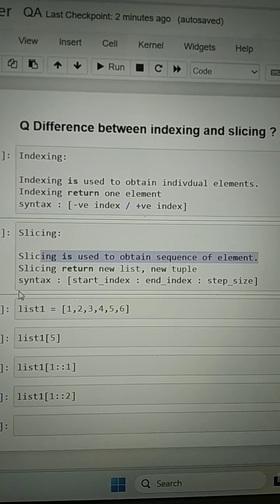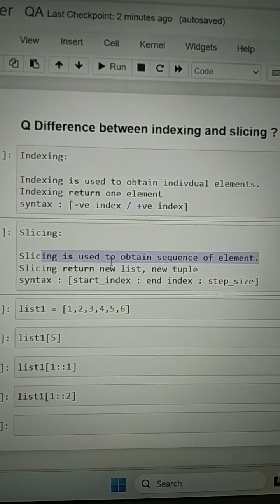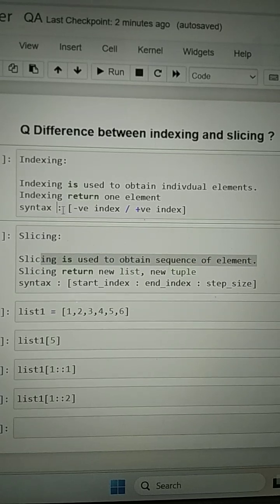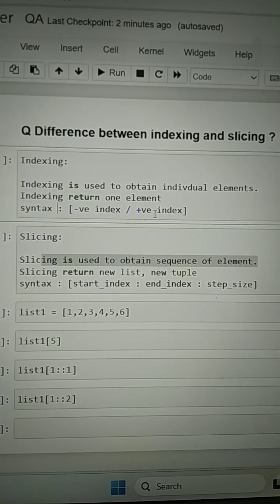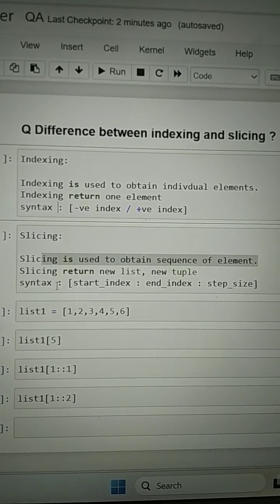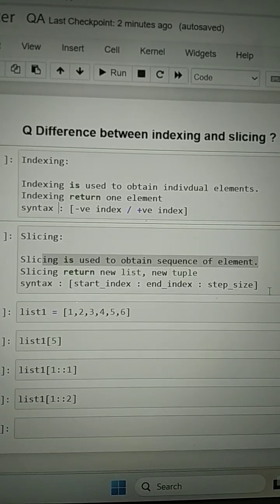Slicing returns a list or tuple. The syntax for indexing is positive or negative index, and for slicing you have start index, end index, and step size.